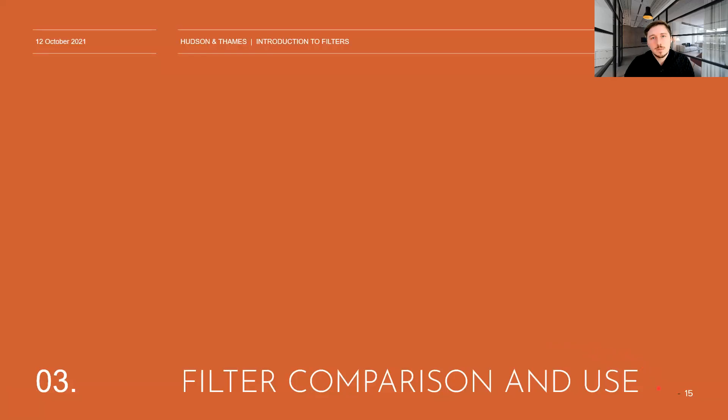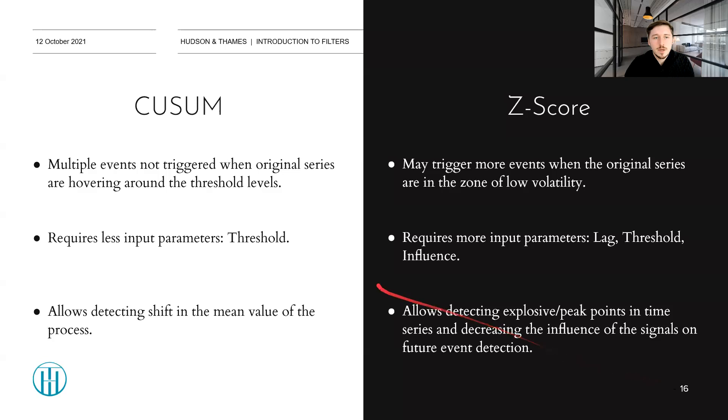Now, let's check the brief comparison between these two algorithms, filters, and some of the use case scenarios. So the upside of the CUSUM filter is that multiple events will not be triggered when the original series are hovering around the threshold events, meaning that the original underlying series have to travel the set threshold H for the event to be recorded. For the Z-score, however, if we're seeing a zone of low volatility, many events can be triggered with relatively small changes of the underlying price series.